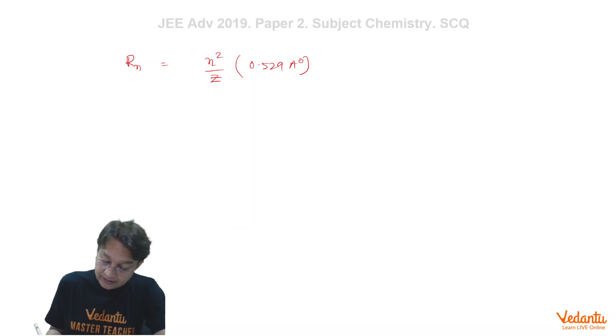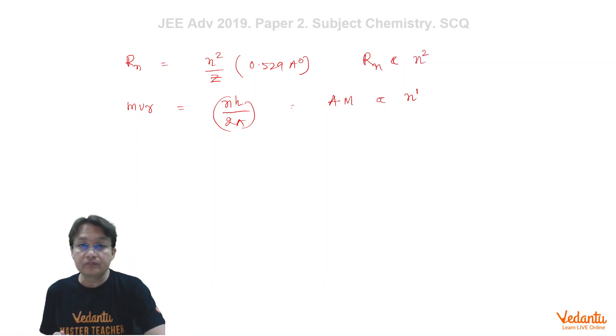Also you remember that angular momentum mvr equals n h upon 2 pi. The fact remains that the angular momentum is proportional to n raised to the power 1 and rn is proportional to n raised to the power 2. These are pretty straightforward facts, very easy facts. Anyone who is doing the Bohr's model will do this.